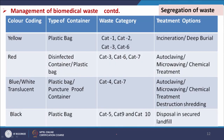For segregation, different types of containers with different color coding correspond to different waste categories. Different waste categories will be placed in different colored containers — made of plastic bags, disinfected containers, puncture-proof containers — and treatment options have already been discussed.